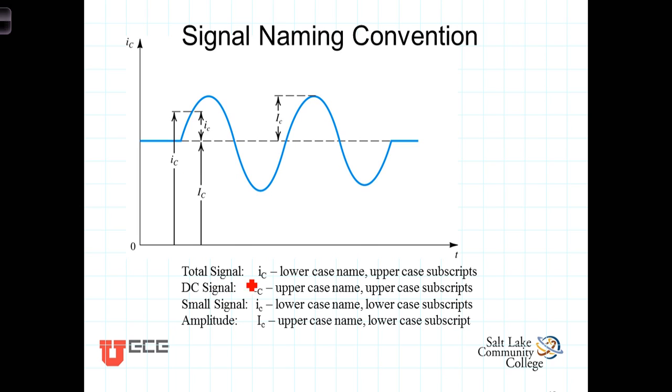So the total signal will have a name that will be the lowercase with capitalized subscripts. And this signal then could be written as i sub C, where this is a capital C, of T. So lowercase name, uppercase C.